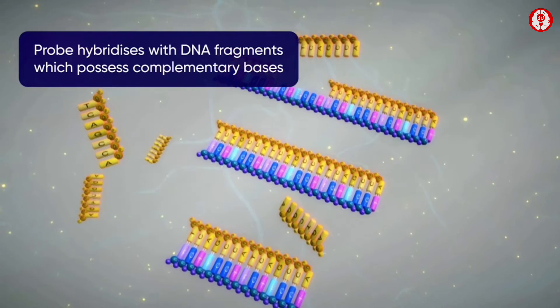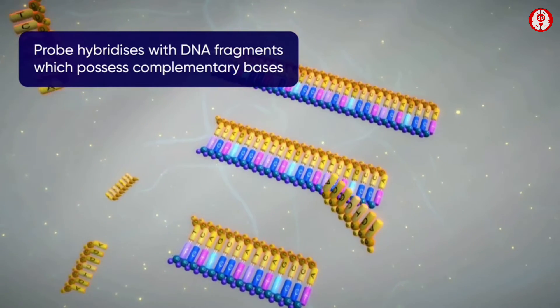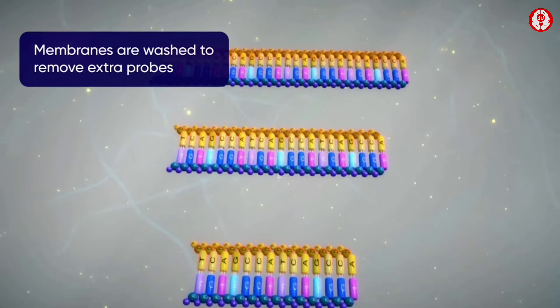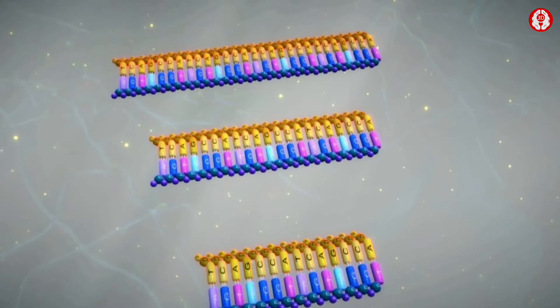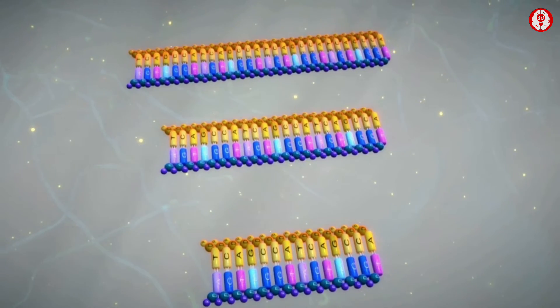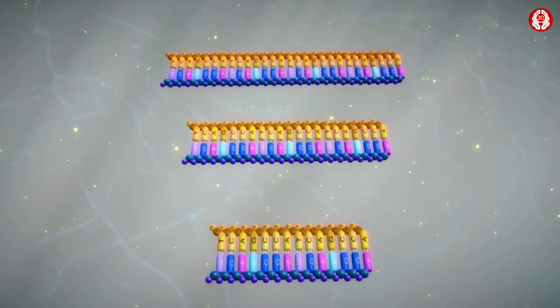The probe hybridizes with the isolated DNA fragments. The extra probe is then washed off leaving behind only the radioactively labelled hybridized segments on the membrane.